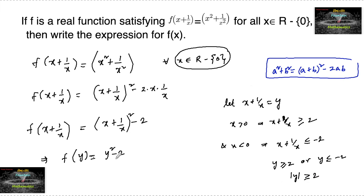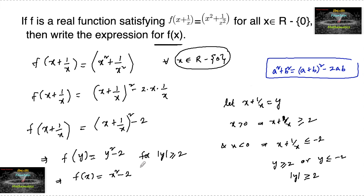So f(y) = y² − 2 for |y| ≥ 2. Changing the variable from y to x, f(x) = x² − 2 for |x| ≥ 2. So the final answer is f(x) = x² − 2, where |x| ≥ 2.